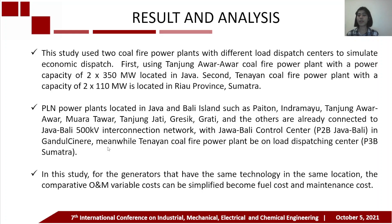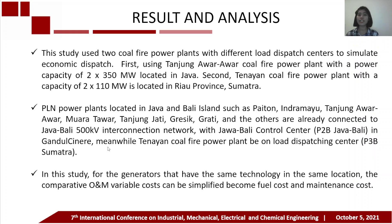This study used two coal-fired power plants with different load dispatch centers to simulate economic dispatch. First, Tanjung Awar-Awar coal-fired power plant with a capacity of 2×350 MW located in Java. Second, Tanayan coal-fired power plant with a capacity of 2×110 MW located in Riau Province, Sumatra. The PLN power plants in Java and Bali — including Paiton, Indramayu, Tanjung Awar-Awar, Muara Tawar, Tanjung Jati, Gresik, Prati, and others — are connected to the Java-Bali 500 kV interconnection network under the Java-Bali Control Center (P2B). Meanwhile, Tanayan coal-fired power plant belongs to the load dispatching center P3B Sumatra.